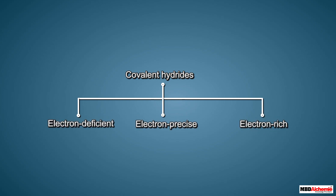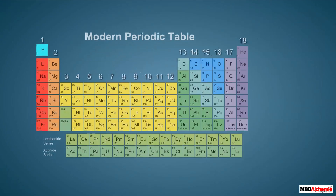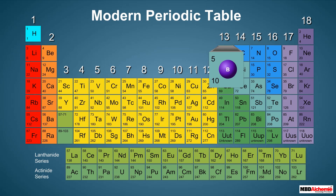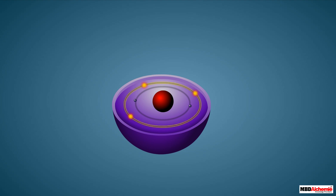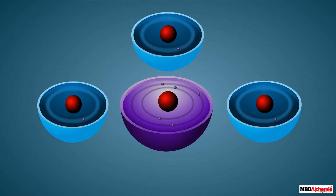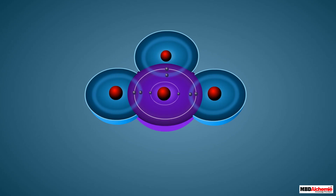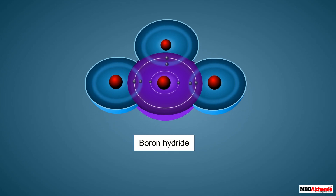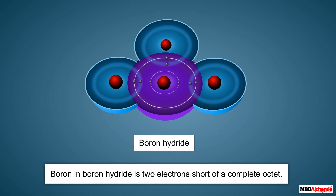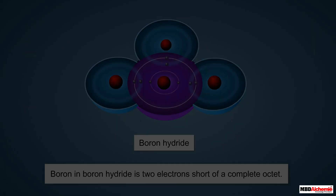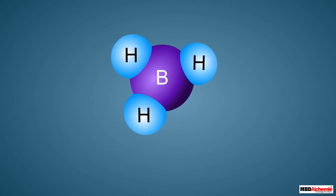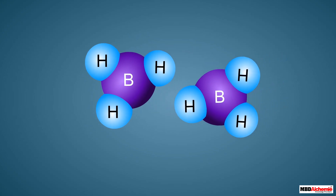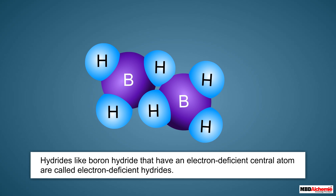Covalent hydrides are further of three types: electron deficient, electron precise, and electron rich. Electron deficient hydrides are formed by group 13 elements like boron. A boron atom has three electrons in its outermost shell, with which it forms three covalent bonds with three hydrogen atoms. The outermost shell of boron in boron hydride has only six electrons — two electrons short of a complete octet. Due to this incomplete octet, boron hydride is unstable and usually exists as its dimer, diborane.